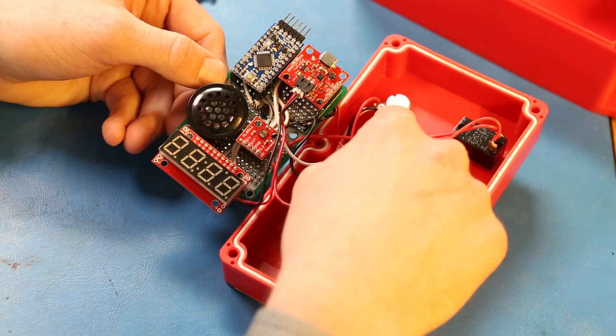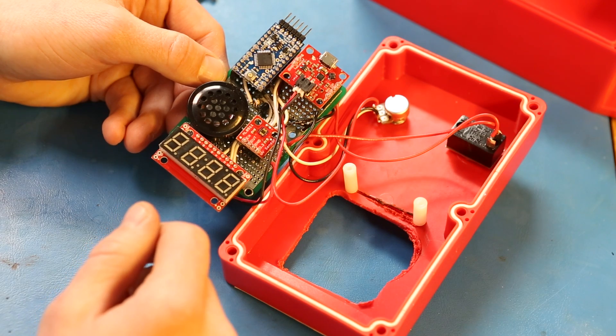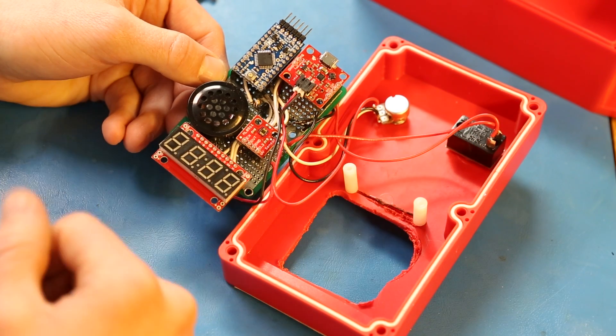All we're using here is a 10k potentiometer with a knob on it to determine your level of crispiness and then one of our giant switches to turn it on and off.